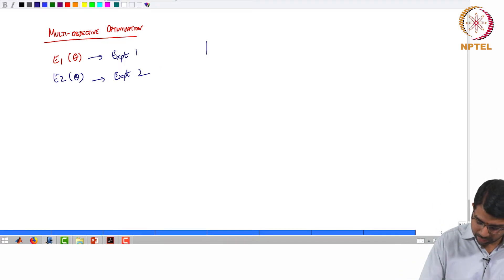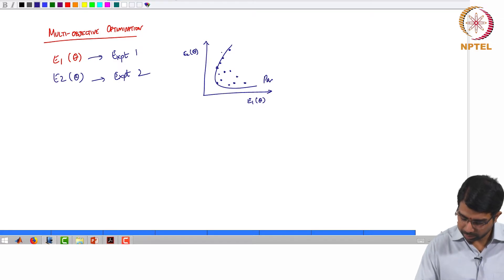So typical way is to plot it. You may get something like this and you may end up computing what is known as the Pareto front.